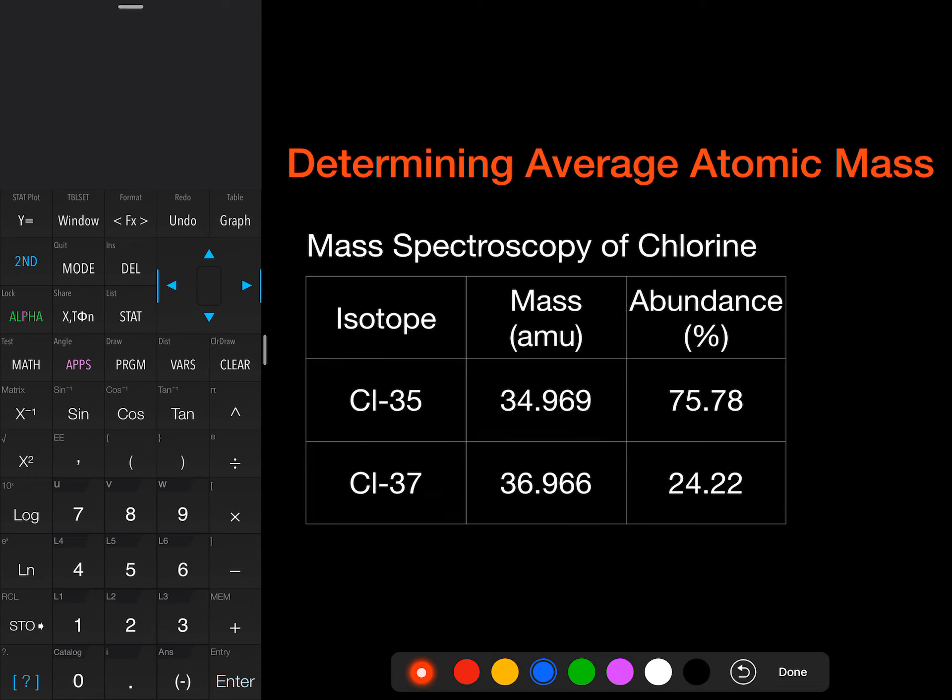Here's the first set of data that we have. We have mass spectroscopy of chlorine, and so we have our actual AMU for each individual isotope, and then we have the abundance that we got from that mass spectrometer.